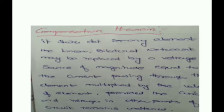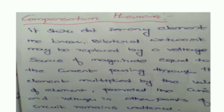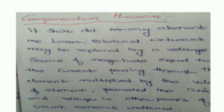This confirms the Reciprocity Theorem. Now coming to the next theorem: the Compensation Theorem. The Compensation Theorem states that in any linear bilateral network, any element may be replaced by a voltage source of magnitude equal to the current through that element multiplied by its resistance. The compensating current is the difference between the original current and the new current after the change.